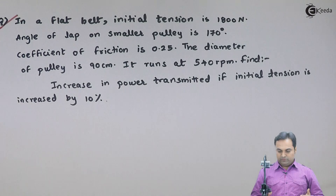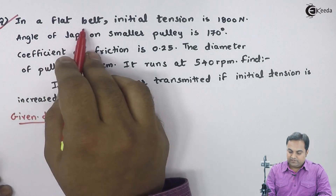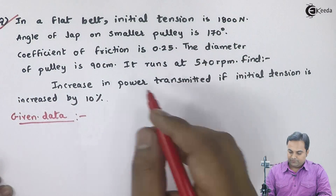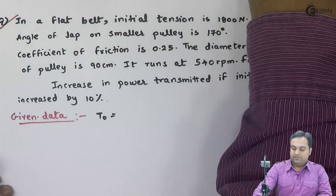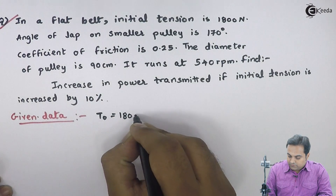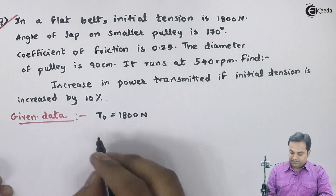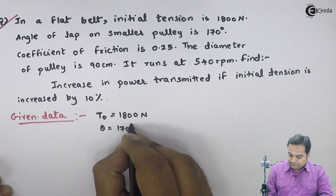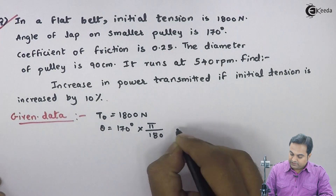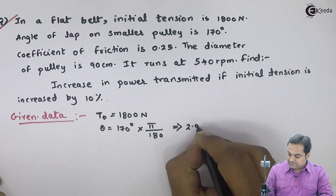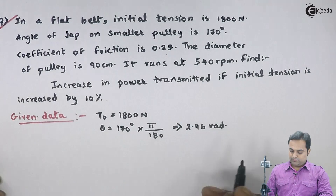Let us start this problem. It is given that in a flat belt, initial tension t0 is 1800 Newton. Angle of lap on the smaller pulley is 170 degrees, so theta is given. I'll convert it into radians by multiplying by pi and dividing by 180, so that is 2.96 radians. Coefficient of friction mu is 0.25.